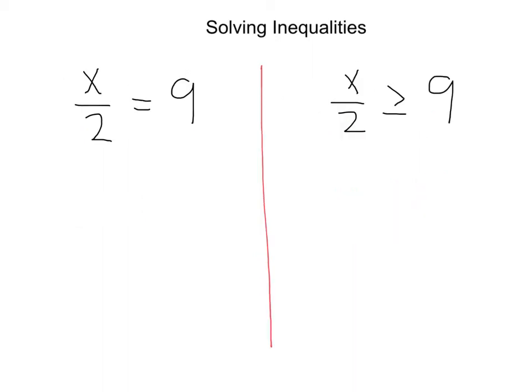Here we've got x over 2 is equal to 9, and x over 2 is greater than or equal to 9. So to solve for this, we'd do the opposite of division. We'd multiply by 2 on both sides. That would leave us with x equals 18.